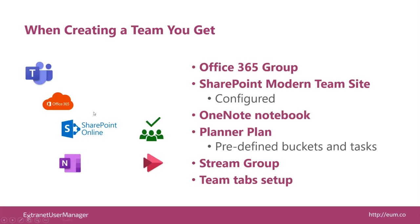You can see here the structure we get. When we create a team — think of that as a client — we get an Office 365 group that includes the modern team site, but we want it configured in a particular way. We've got site columns, content types, views on our lists and libraries configured specifically for client sites, all pre-configured. We've got our OneNote notebook, and same thing with Planner — we may have pre-defined buckets and tasks set up for every team. And then Stream for recordings, and tabs set up in Teams in a consistent way so people know how to find things.